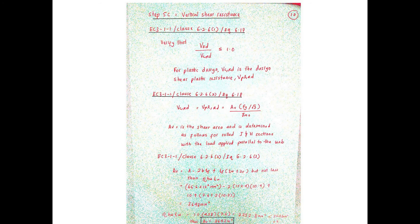Next, we need to verify the vertical shear resistance of the proposed beam. EC3 part 1-1, clause 6.2.6(1), equation 6.17, provides the guideline in verifying the vertical shear resistance.